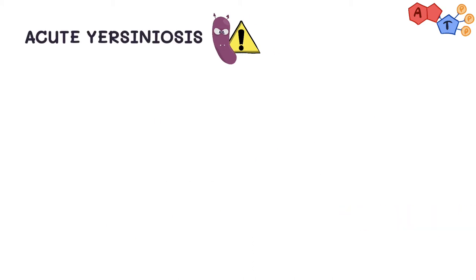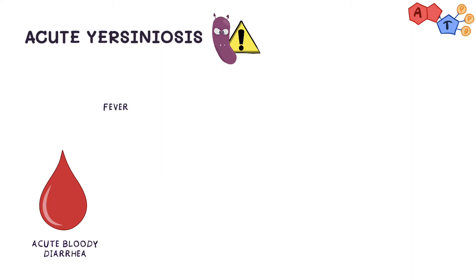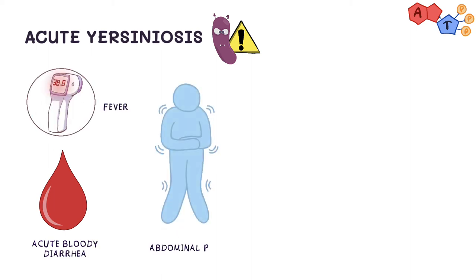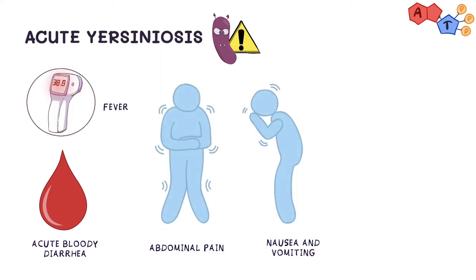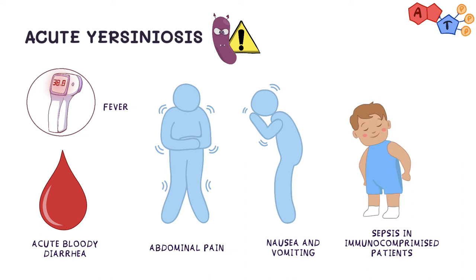Acute yersiniosis most commonly presents with acute bloody diarrhea, fever, abdominal pain, and nausea and vomiting. Sepsis can also develop in immunocompromised patients. This happens mostly in children, with toddlers being the most affected demographic.